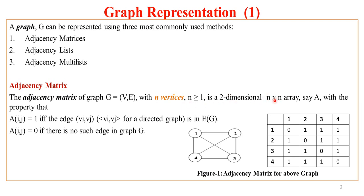If a graph has n vertices, it will form an n×n array. We consider A as the array. A[i][j] = 1 if and only if there is an edge connecting vertex Vi to Vj. If there is an edge from vertex 1 to vertex 2, that entry is marked as 1; otherwise it is marked as 0. As there is no self-loop from vertex 1 to itself, all diagonal entries are 0.